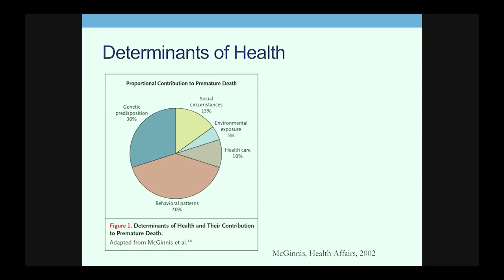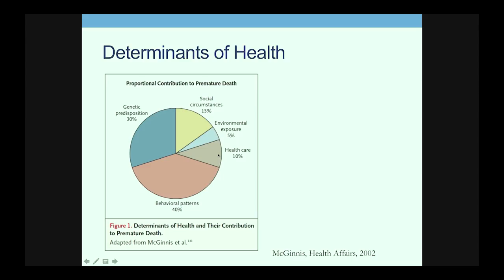It's important to talk about the social determinants of health when I give a talk around health care disparities. The reason I open with this is to explain that what I'm going to talk about — health care disparities — is actually only a very small contributor to health outcomes. Here is a well-known chart on proportional contributions to premature death, divided into behavioral patterns, genetic predisposition, social circumstances, environmental exposure, and health care. Health care contributes about 10% — only a little bit — while these other factors contribute much more.